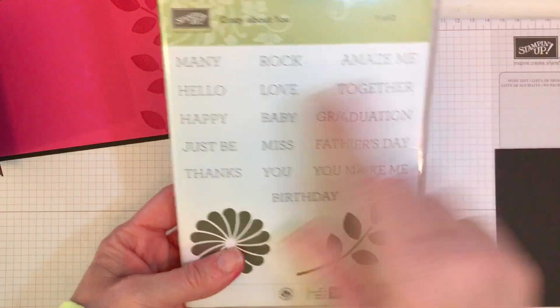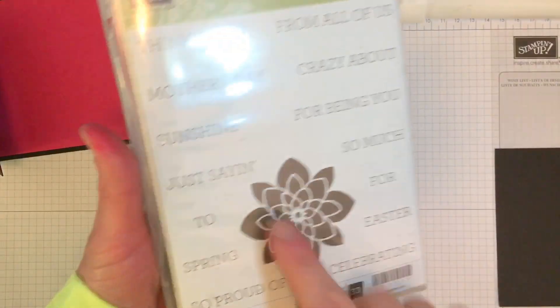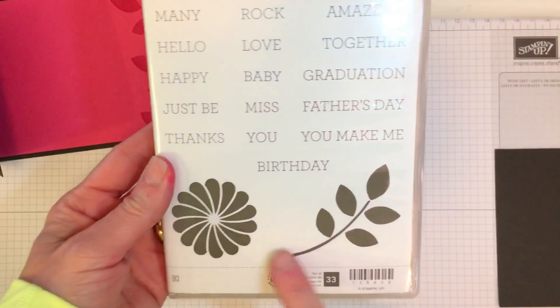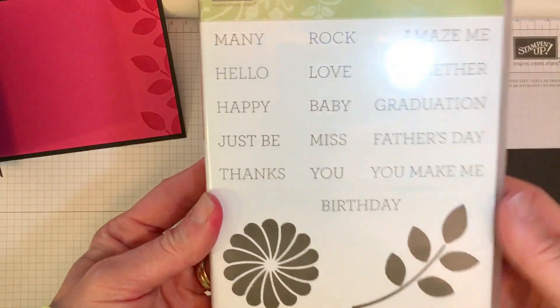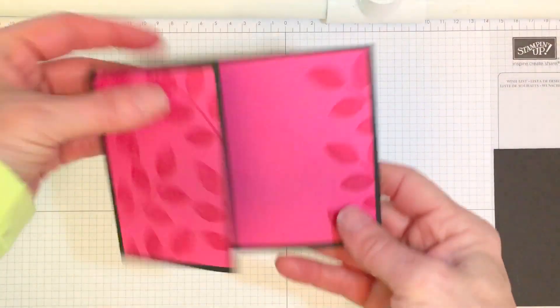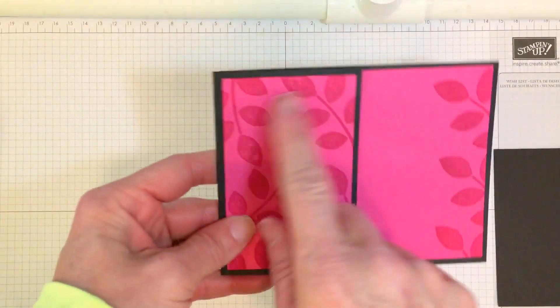So as you can see, lots of words. The medallion, the leaf, and then this little flower works perfectly in our circle punches or our circle framelits. I'm going to put that aside. And then again, my little card I showed you I already stamped, and I used Melon Mambo.